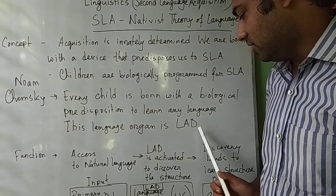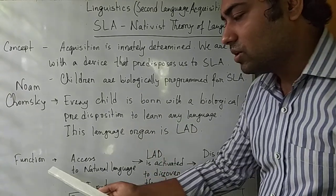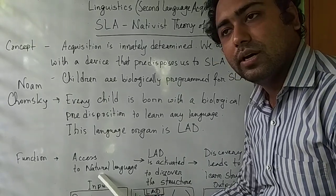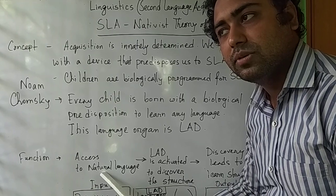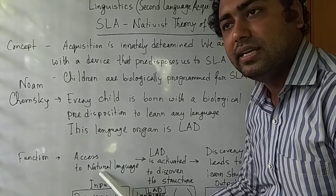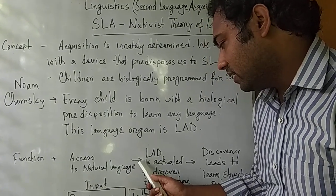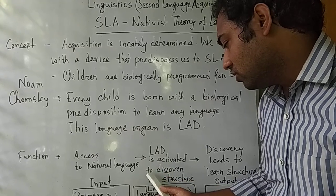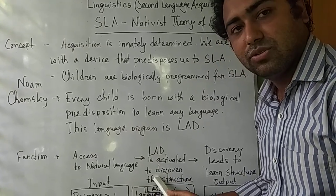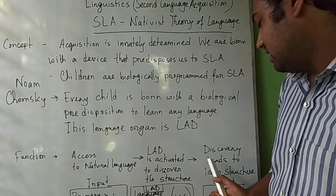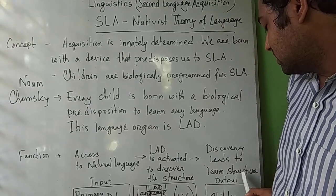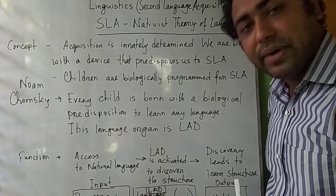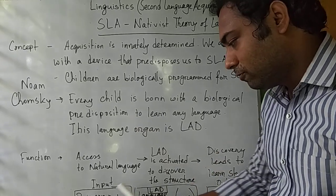How does the LAD function? The first step is access to natural language — a child learns some language from his surroundings and tries to process it. In the second step, the Language Acquisition Device inside the brain is activated to discover the structure of the language. The third stage is that this discovery leads to learning the structure, and the child formulates patterns and develops the language.